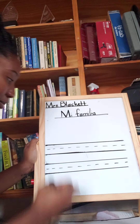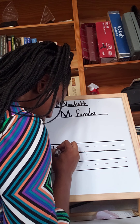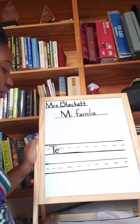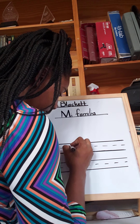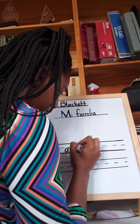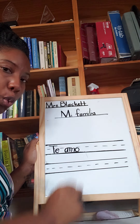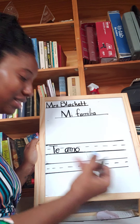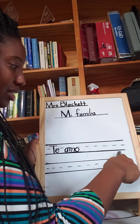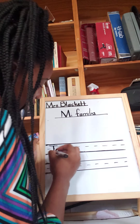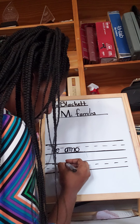We're going to write sentences like that. Te amo — T-E, space, A-M-O. Te amo means I love you. So I'm going to write it here and I want you to do the same. You're going to write your sentence in Spanish and then write it in English. So: te amo — I love you.